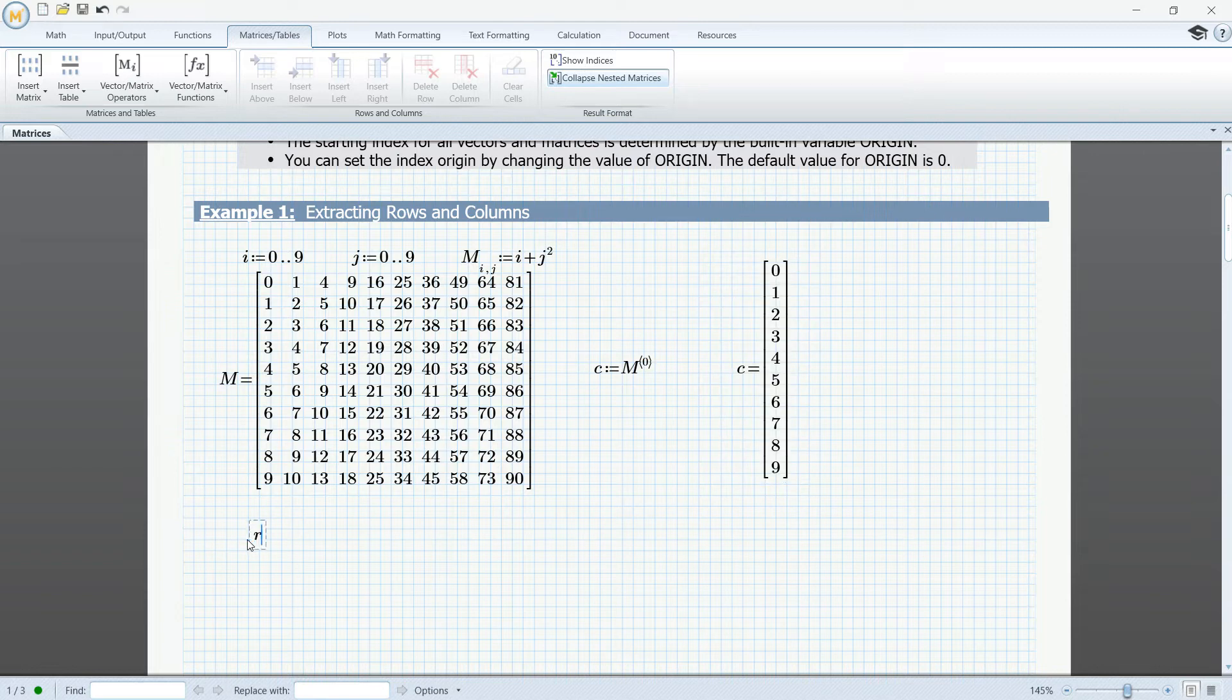We can do the same thing for the rows. I can type in the name of the matrix, use keyboard shortcut, Ctrl-Shift-R, and I'm going to type in here 0. So if we go here and evaluate R, you can see that we have extracted the first row of this matrix. Now, the reason why the first row is 0 is because vector and matrix indices are based on the origin of the worksheet, which by default is 0. You can change that to 1 if you'd like from the ribbon in the calculations tab, or you can do it directly in the worksheet by redefining the origin to another value.